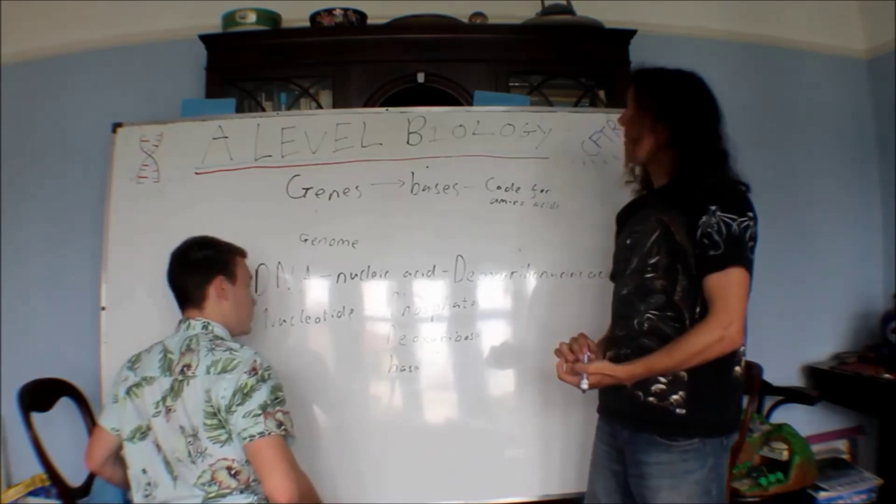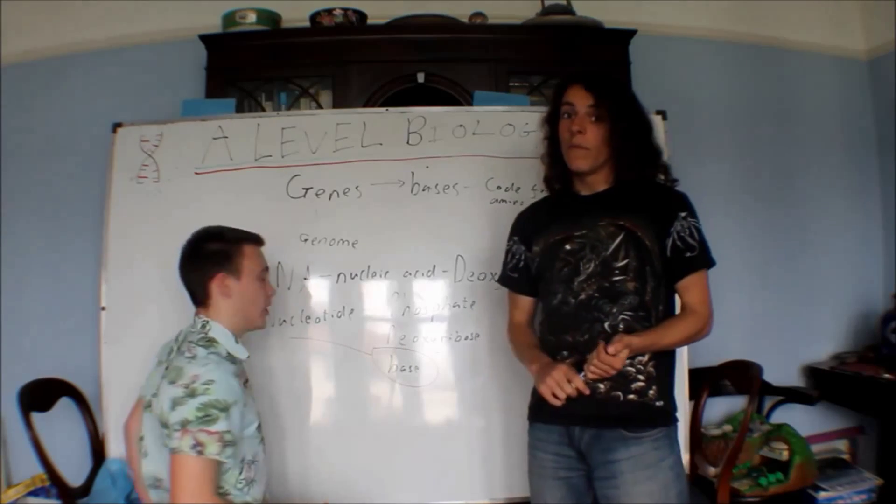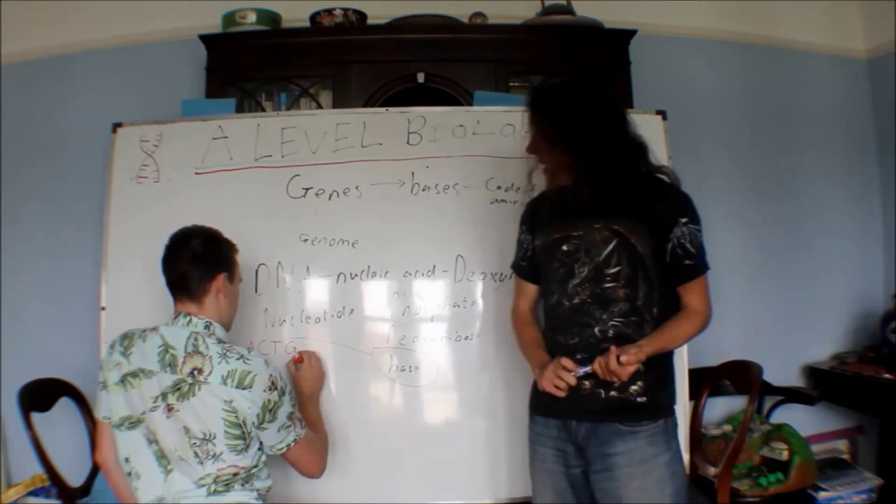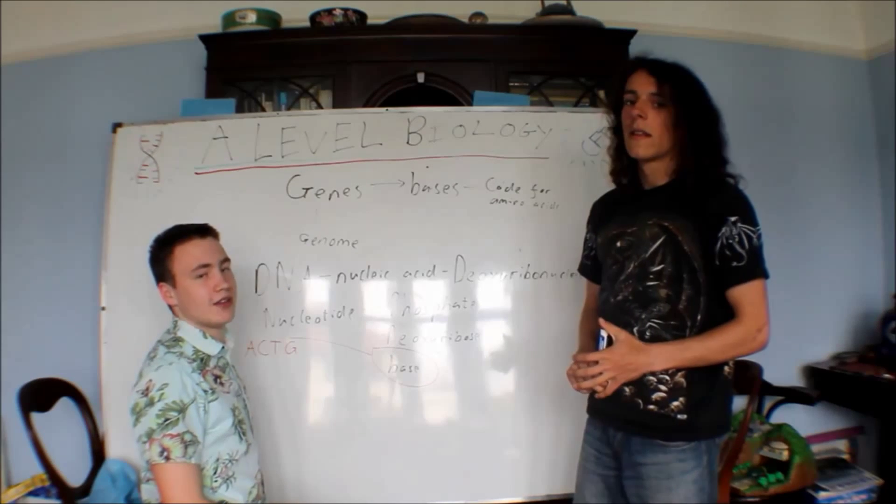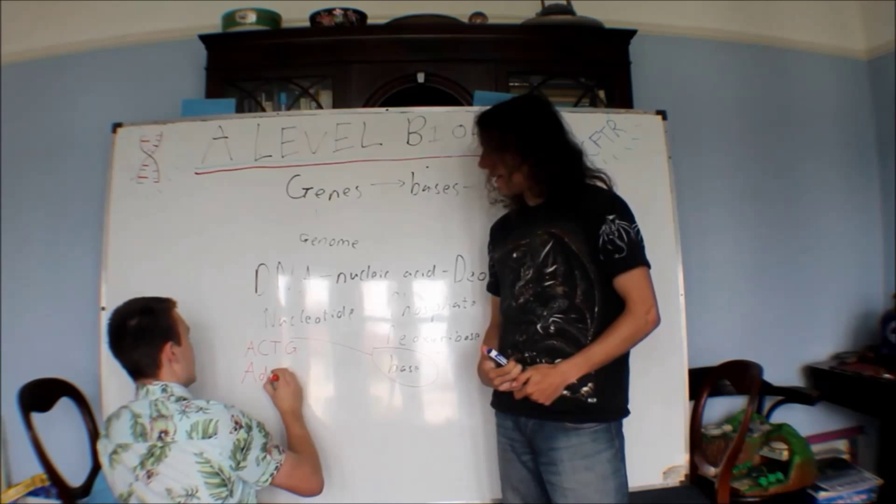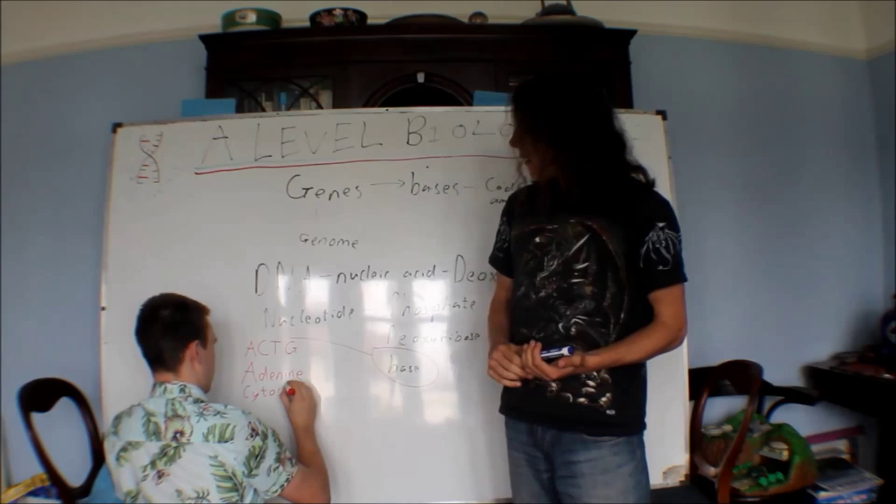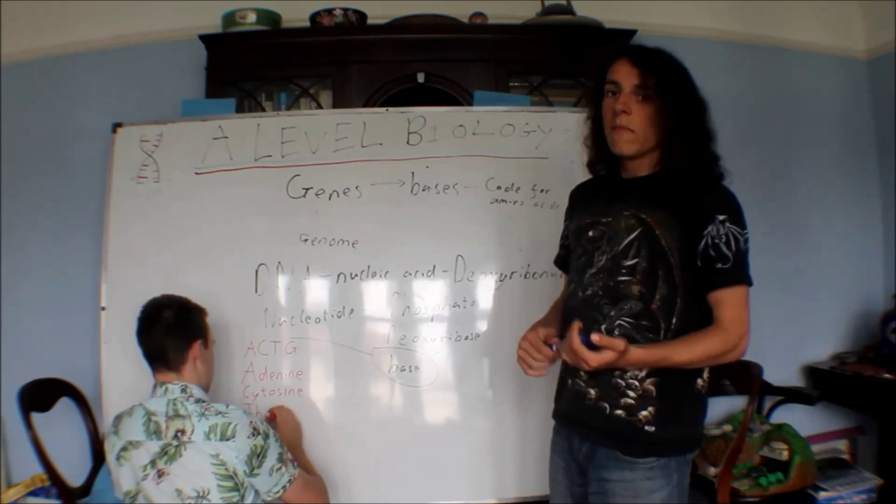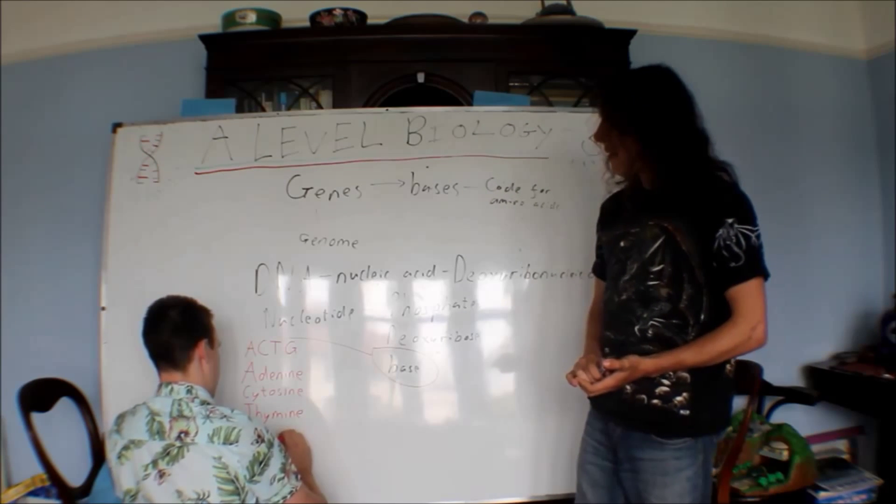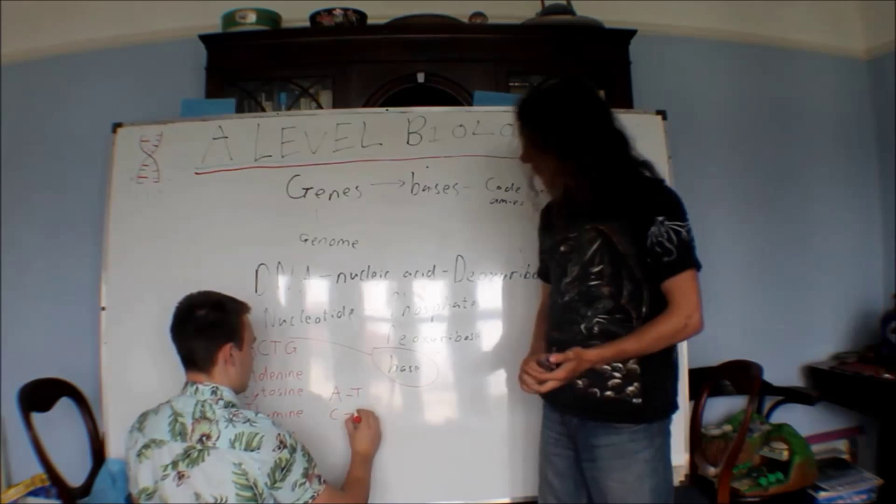So we're making the link to the bases. The bases are quite important. There's four types. There is A, which bonds to T, and C, which bonds to G. But you need to go a little bit further, you need to know the names. A is adenine, C is cytosine, T is thymine, and G is guanine.